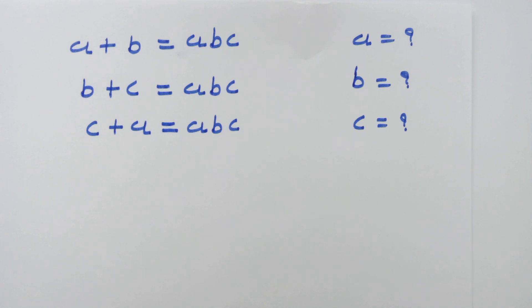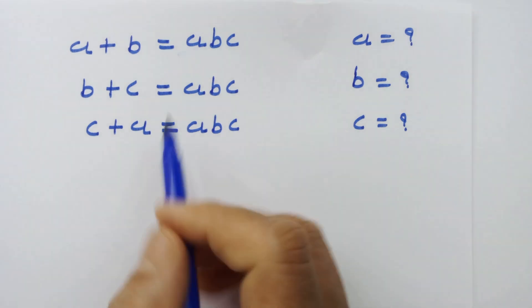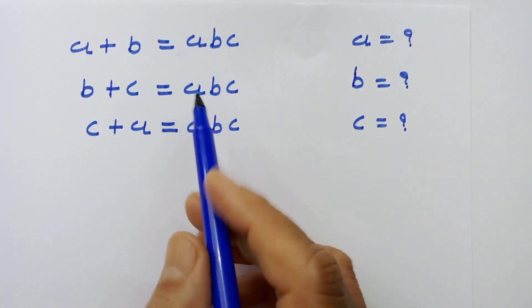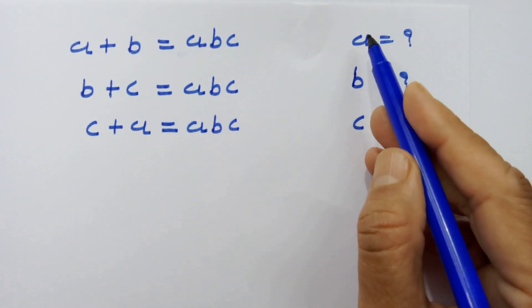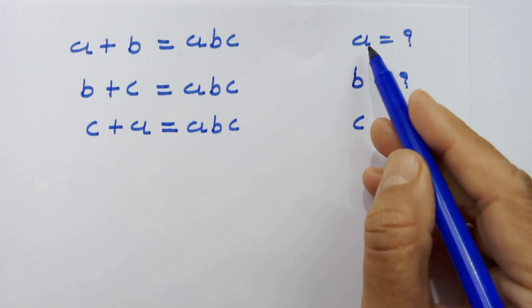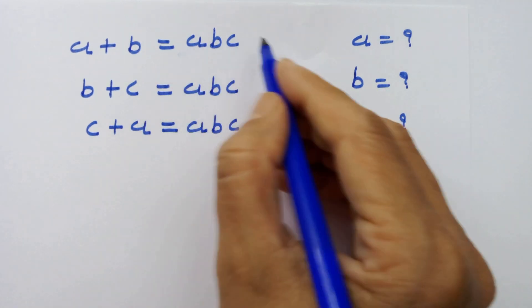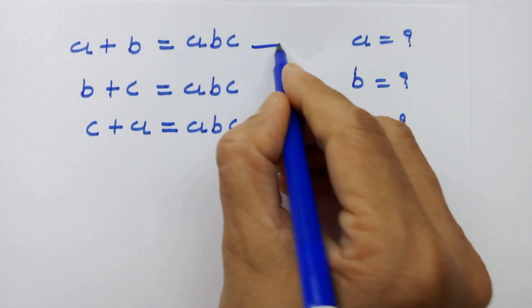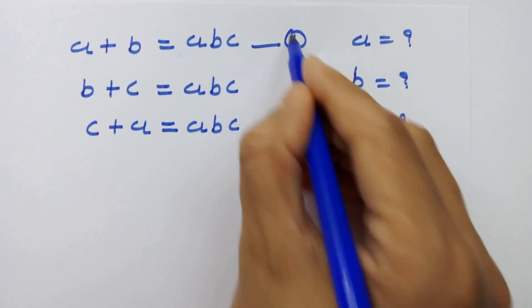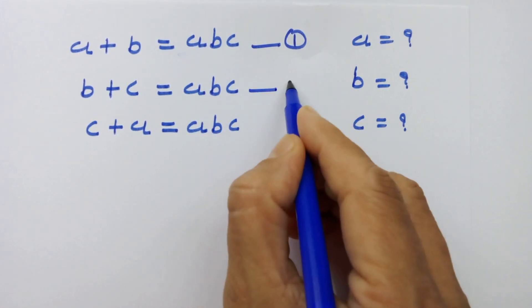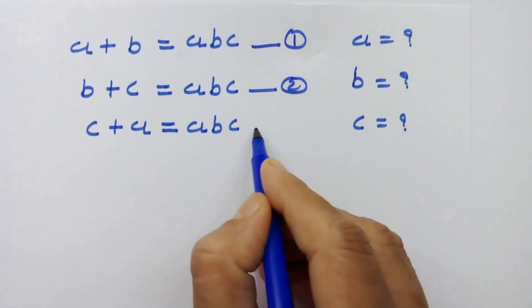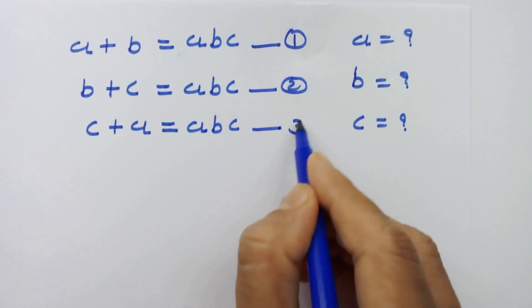Hello friends. Now these are our equations and we have to find the values of A, B, and C. For that, let's call this equation number 1, this is 2, and this is 3.